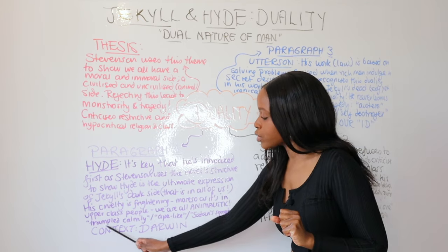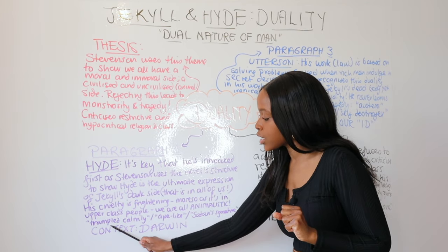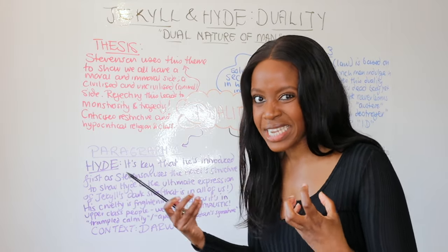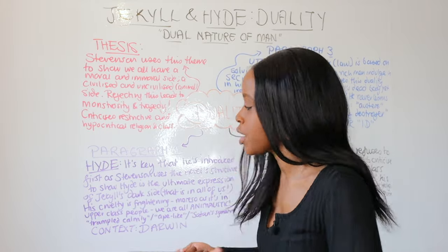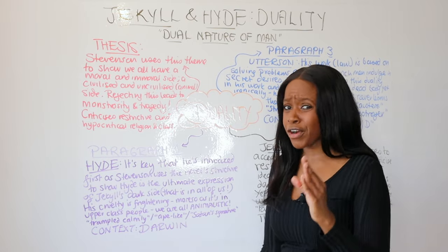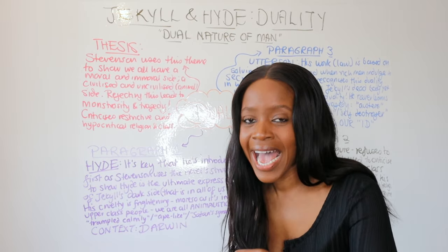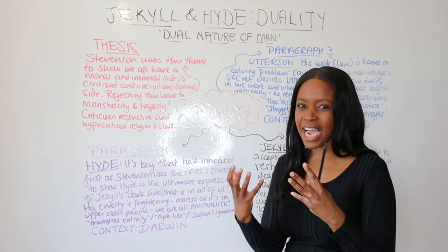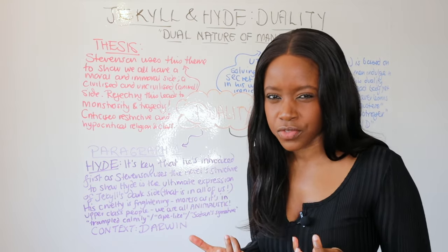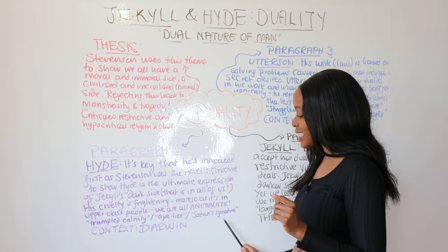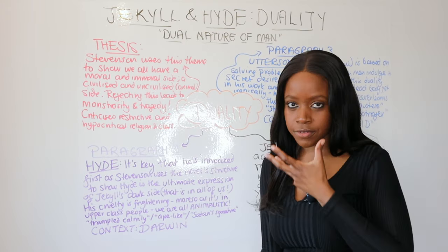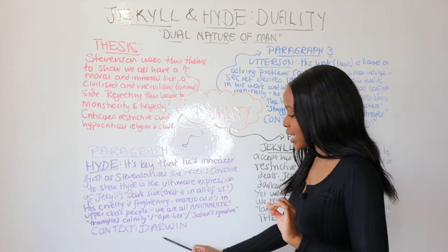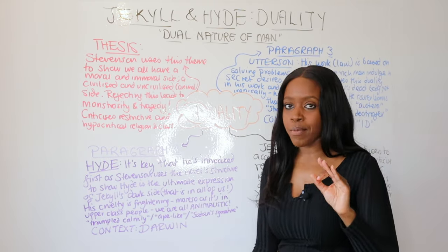The quotations to demonstrate this point: in chapter one we learn that Hyde 'trampled calmly' on the little girl - this oxymoron illustrates his animalistic and predatory nature. Equally, he is described in very Darwinian terms as being 'ape-like.' The third quotation demonstrating just how evil and frightening an outsider he is comes when we learn that he had 'Satan's signature on his face.' For your AO3 marks, make this a context point.